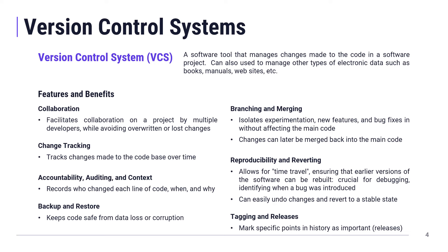Version control also provides backing up and restoring your code — if your laptop fails, you have a remote backup. Branching allows parallel paths of development within your repository, so if you want to experiment with a new feature without messing with the original codebase, you can branch off, work on that feature, and if it's successful, merge it back into the main code.